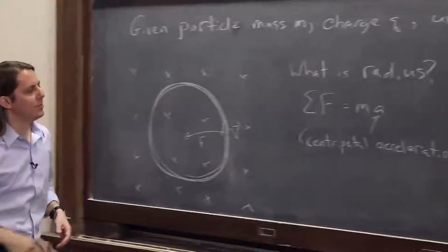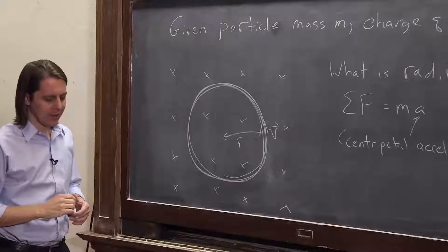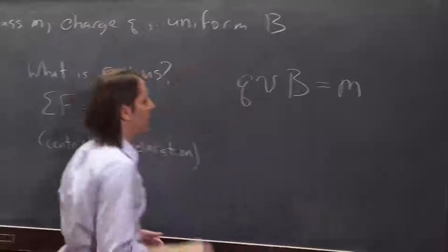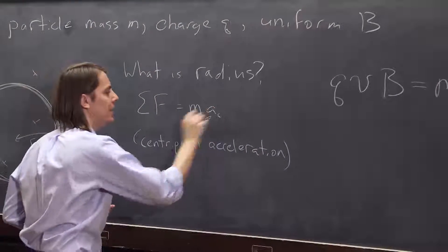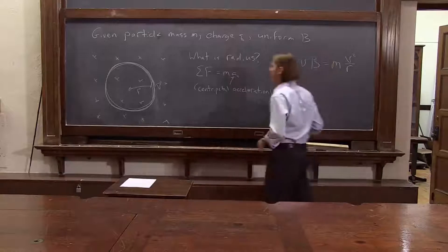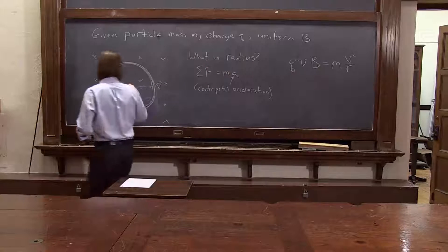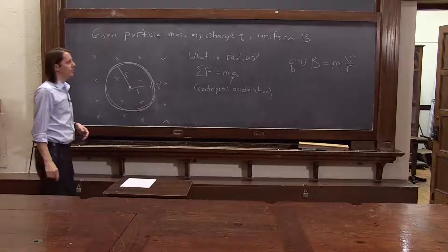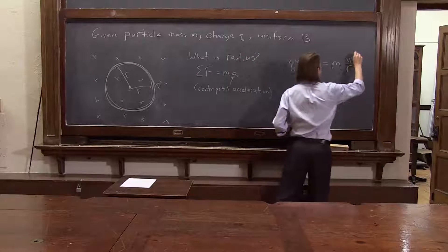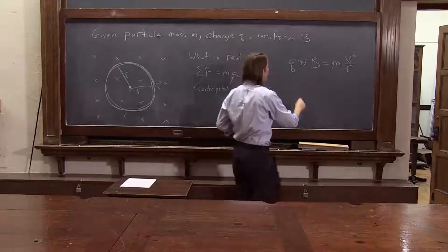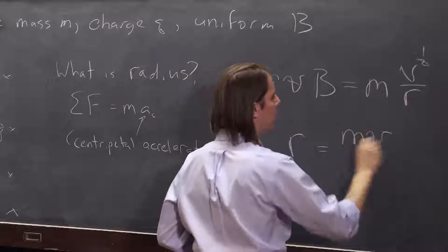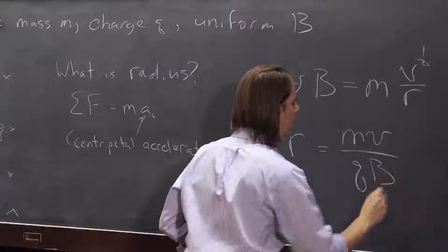We were given q, we were given b. We know it's moving with some v. And that's going to equal m times the centripetal acceleration, which is v squared over r, which you may remember from mechanics. There's r, the radius of the circle. So we can start canceling things and solve for r. And you get that r, the radius of the circle, is m v over q b.